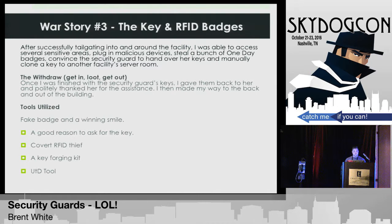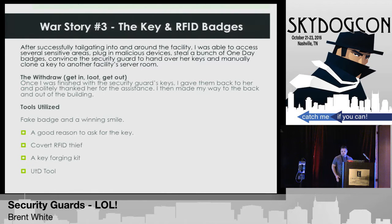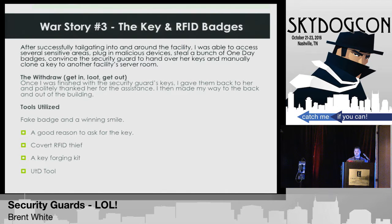War Story 3 is one of Tim's. He has a really cool clipboard that opens up, and inside he has three different RFID readers attached to a Raspberry Pi. He can stand in line, bump someone on the side, and clone their badge. In this particular situation we'd already made our way into the building, so he went up to the security guard. Again, the word 'inventory' is great for some reason — he told the guard he was doing key inventory.